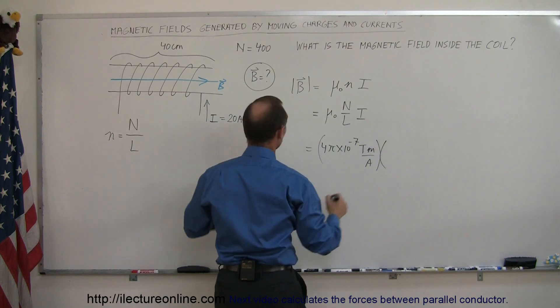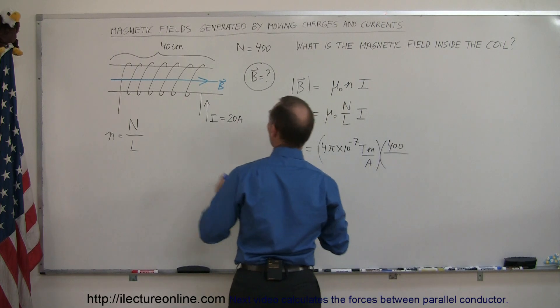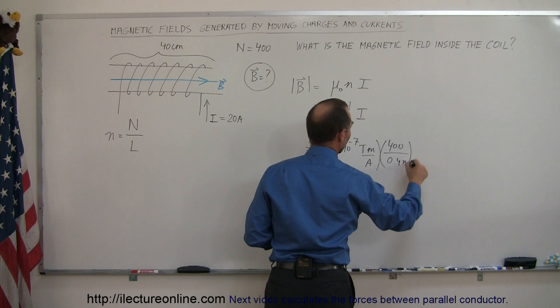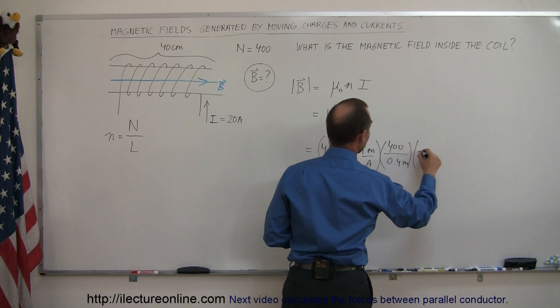Multiply it times the total number of loops, which is 400, divided by the length of this, which is 0.4 meters. And we multiply that times I, which is 20 amps.